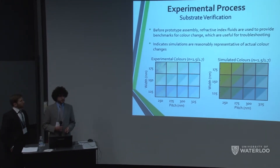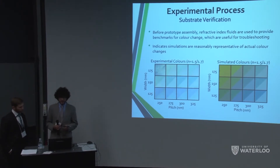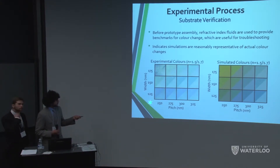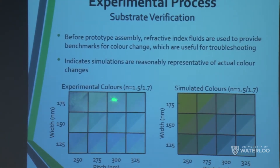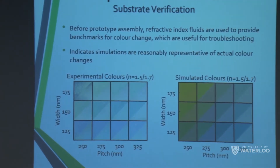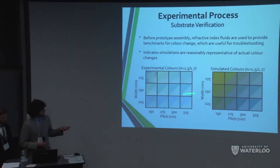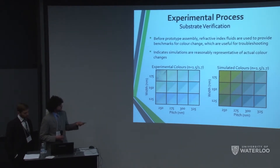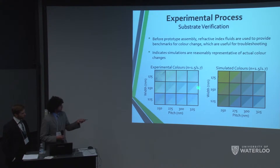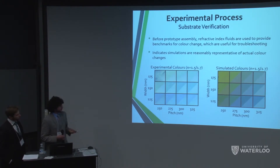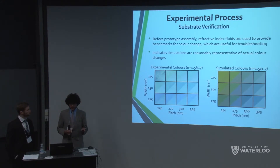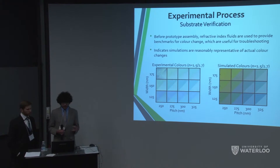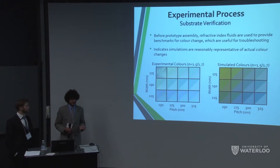Before applying the liquid crystal, we wanted to verify experimentally that a change in refractive index actually changes color. This experiment shows that at different periodicities and dimensions we get a change in color when you change the refractive index from 1.5 to 1.7 — the range of the E7 liquid crystal we use. Comparing simulations with experiments shows a clear change in color and matching trends, for example at 325 nanometers periodicity and 150 nanometer width. Discrepancies are likely due to the light source not being truly white and simulation parameters not being 100% realistic.